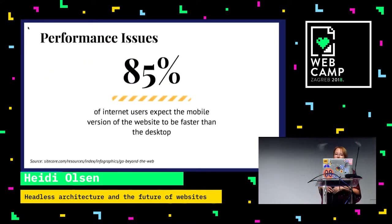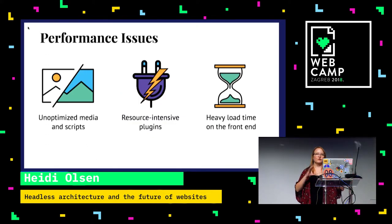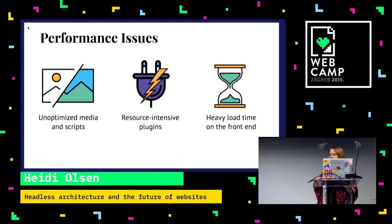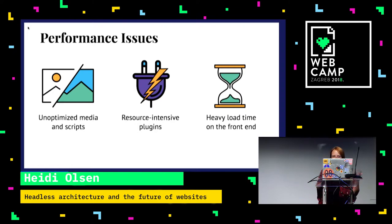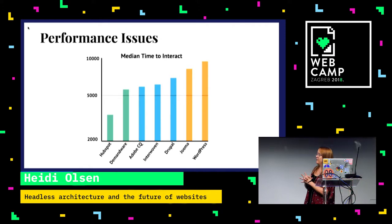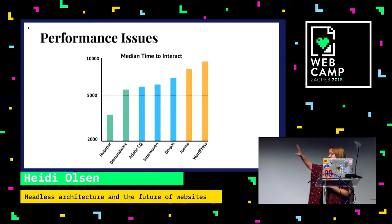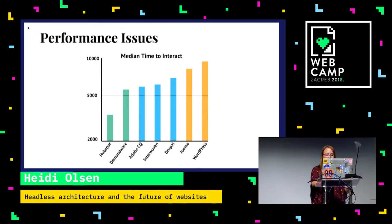Performance is extremely important. 85% of internet users expect the mobile version of a website to be faster than the desktop, which is totally fair but really hard to do with monolithic systems. Even if you ship something super performant, content editors go in and mess everything up — they upload huge images and add scripts. So you add a plugin to compress images or a caching plugin, but those plugins are super resource-intensive and called every time on page load. Median time to interact for popular CMS platforms — WordPress is almost 10 seconds. That's completely unreasonable.